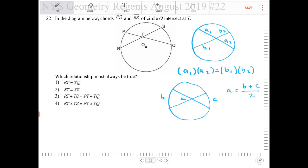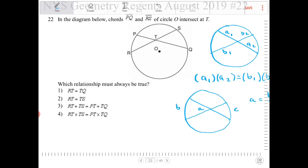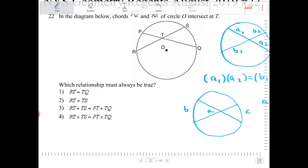RT equal to TS. They don't have to be equal either. RT plus TS. RT plus TS is equal to PT plus TQ. That is not true either.